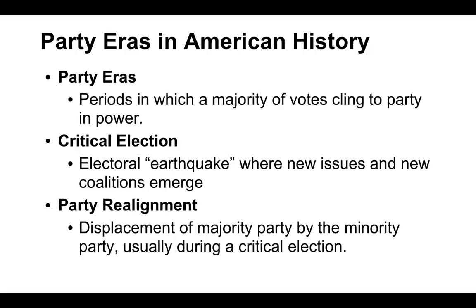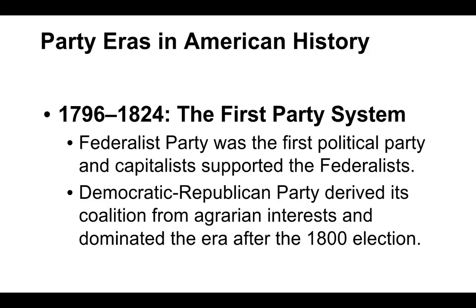The first party era, from 1796 to 1824, is the first party system. We see the formulation of parties. The Federalist Party was the first political party, and capitalists supported the Federalists. The Democratic-Republican Party derived its coalition from agrarian interests — farmers — and dominated the era after the 1800s. From Thomas Jefferson to 1824, the Democratic-Republican Party were the ruling party.